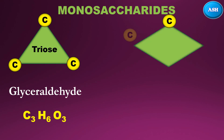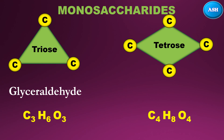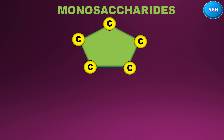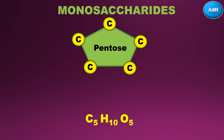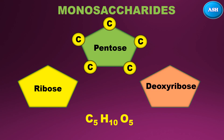With four carbon atoms, known as tetrose, the general formula is C4H8O4, and the example is erythrose. Next is five carbon atoms, known as pentose. The general formula is C5H10O5, and examples are ribose and deoxyribose.